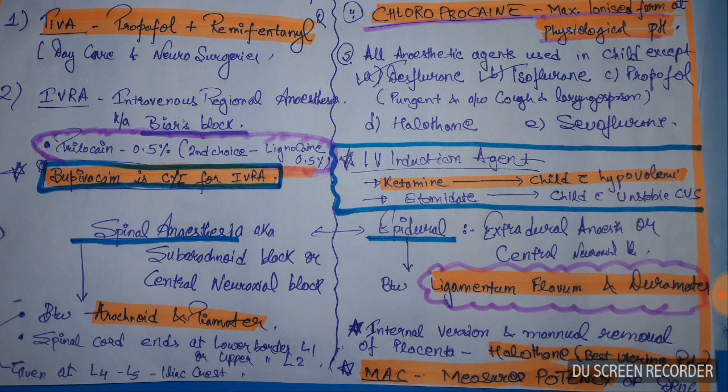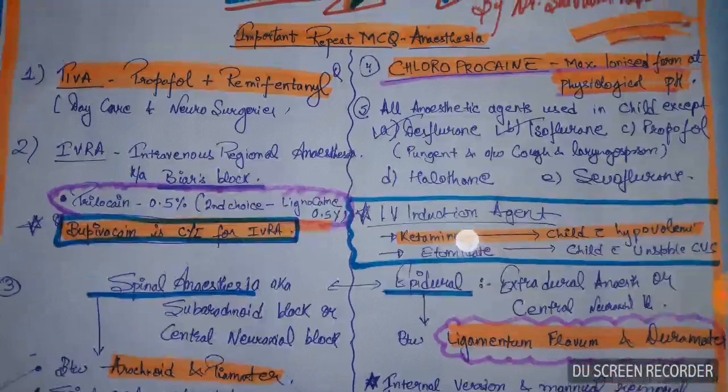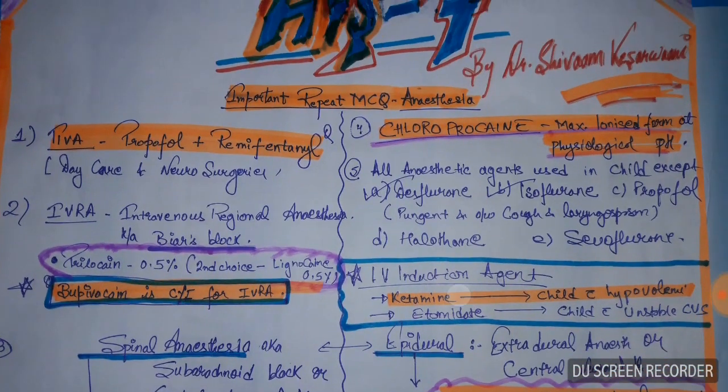The drug of choice for porphyria patients is propofol. Drugs that precipitate porphyria include ketamine, etomidate, and pentazocine. These points are not on the current slide but are important additional high-yield facts for anesthesia.